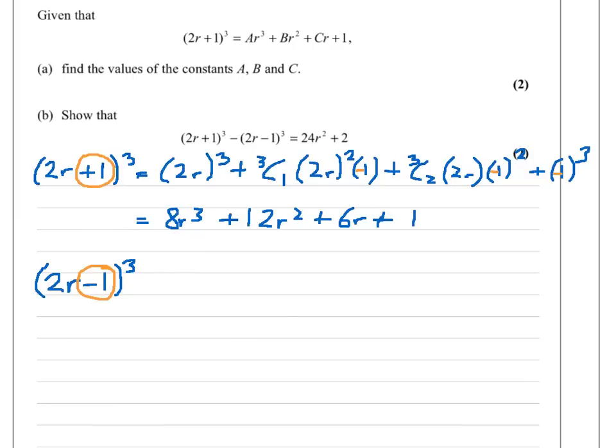The 8r³ won't change. Here, effectively there is a minus, so this becomes minus 12r². The minus 1 is squared, and minus 1 times minus 1 is plus 1, so that stays as plus 6r. But at the end, minus 1 times minus 1 times minus 1 is back to being negative, so minus 1.